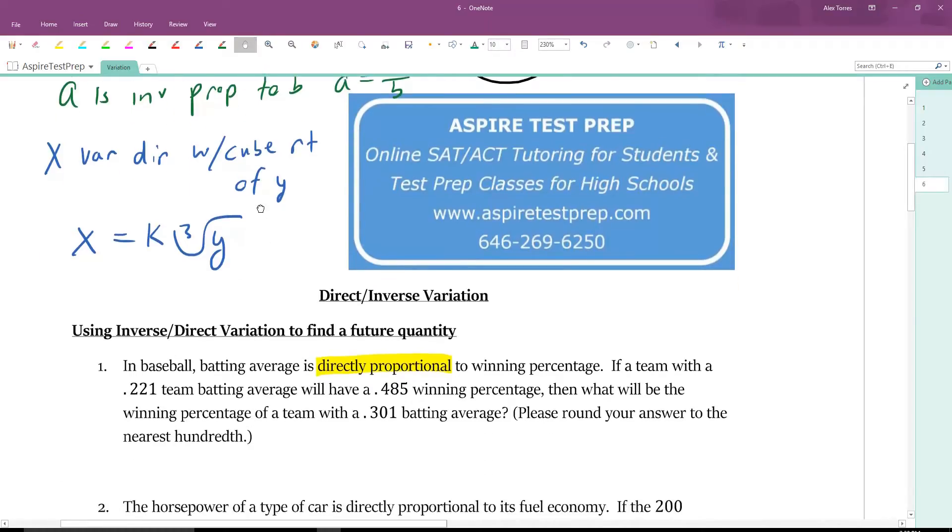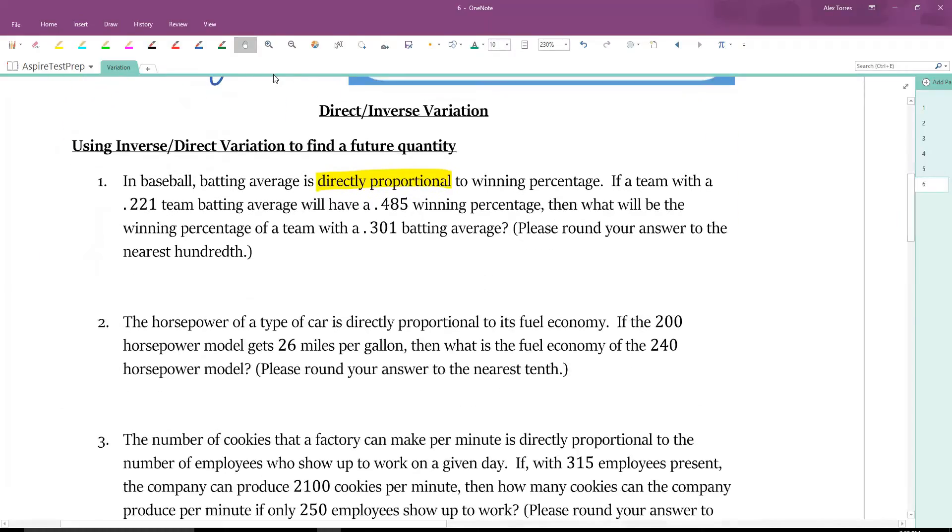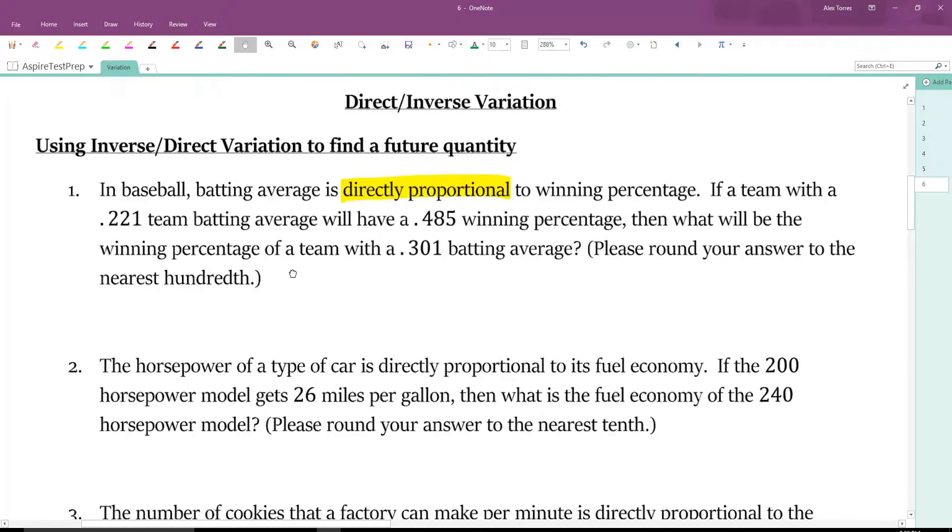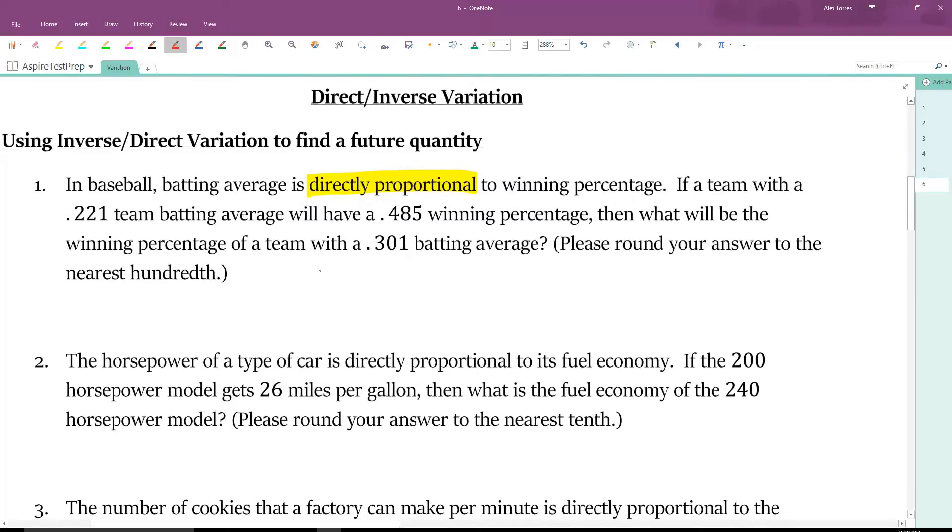So, in our question here, batting average is directly proportional to winning percentage. The average is directly proportional to the percentage. Then we can fill into the equation. A team with a .221 average has a .485 percentage.